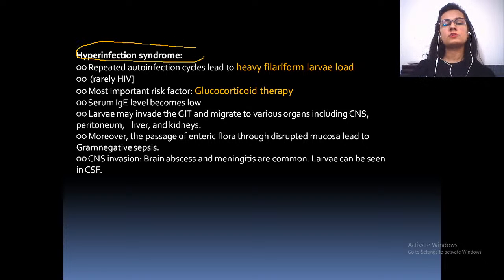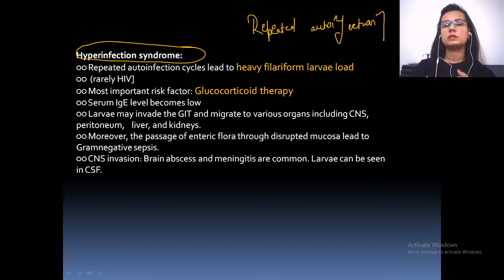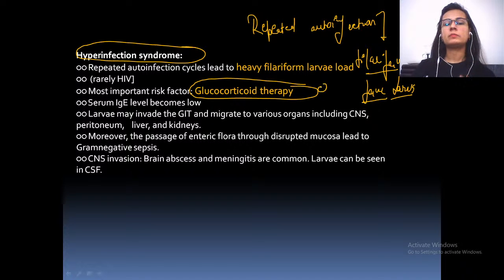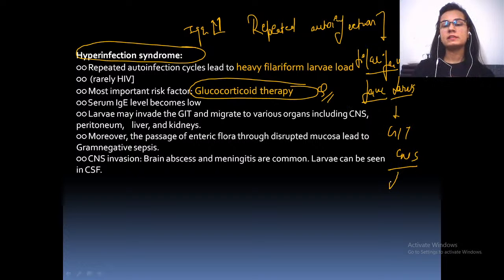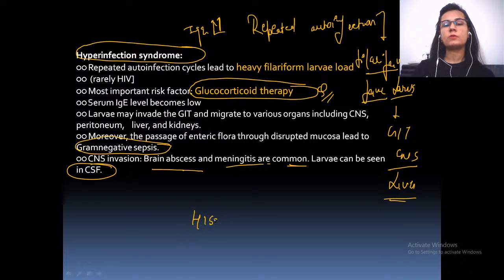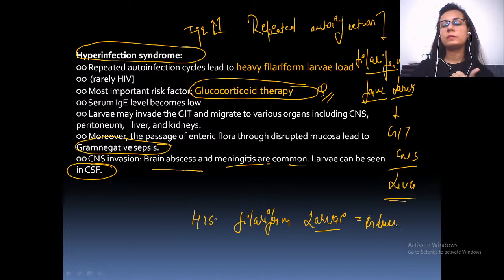Hyperinfection syndrome: Repeated autoinfection leads to a heavy filariform larval load in the body. The most important risk factor is glucocorticoid therapy — IgE levels rise, larvae migrate to GIT and various organs like CNS, liver, and kidney. Passage of enteric flora through disrupted mucosa leads to gram-negative sepsis. CNS invasion, brain abscess, and meningitis are common; larvae can even be found in CSF.